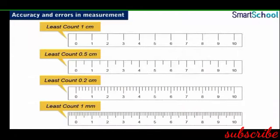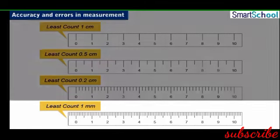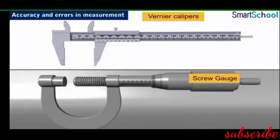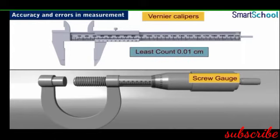Another type of error is least count error, which can be associated with both systematic and random errors. Least count is the smallest value of measurement that can be measured using an instrument, and all values are considered precise up to the least count of the measuring instrument. For example, if you are using a meter scale, its least count is one millimeter. In academic laboratories, common equipment used to measure length are a vernier caliper, with least count of 0.01 cm, and a screw gauge, with least count of 0.001 cm.